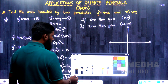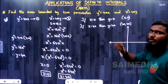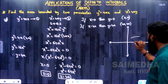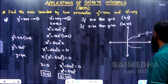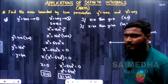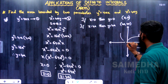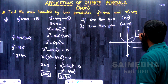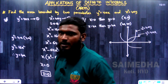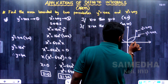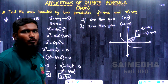Now let us draw the two graphs. The first parabola y² = 4ax opens to the right. The second parabola x² = 4ay opens upward. For these two parabolas, we need to find the shaded region between them — that is the area we have to calculate.